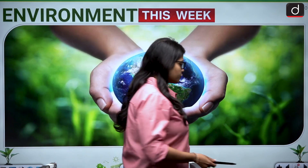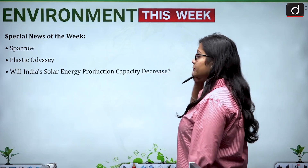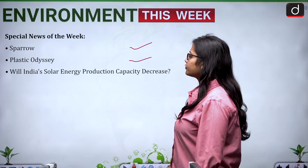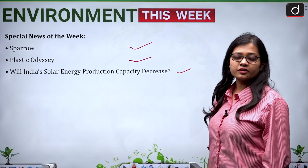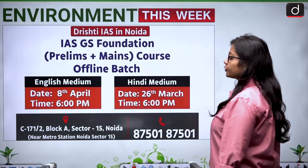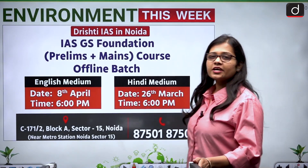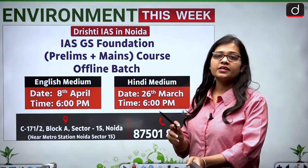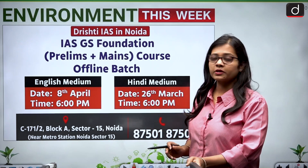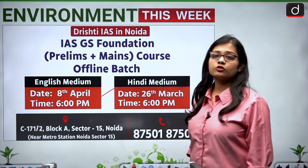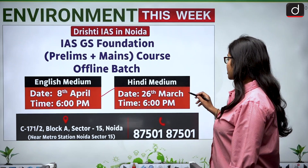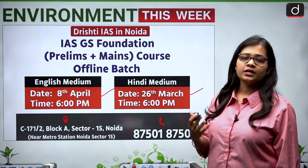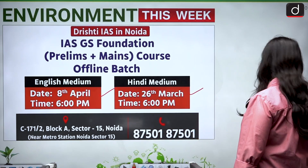The topics we will be discussing today are: Sparrow, Plastic Odyssey, and will India's solar energy production capacity decrease or not. Before moving forward, Drishti IAS Noida center offline batch admissions are open for both Hindi medium and English medium for the IAS foundation course covering prelims and mains. English medium batches start from 8th April and Hindi medium from 26th March. Call 87501 87501 for more information.